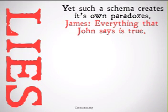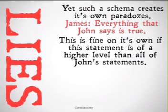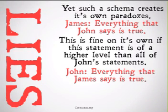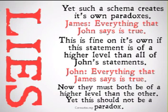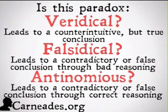Imagine that James says that everything that John says is true. This seems to be fine on its own, so long as the level of this statement is of a higher level than all of John's statements. However, if John then says that everything that James says is true, this statement has to be of a higher level than the last one, and they each have to be of a higher level than each other. So we have a paradox, because that's impossible. But it seems plausible for James and John to say of each other that everything they say is true — so we've created a paradox where one didn't exist before. Therefore, we have a problem with this truth hierarchy schema.